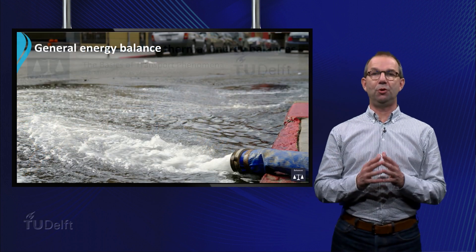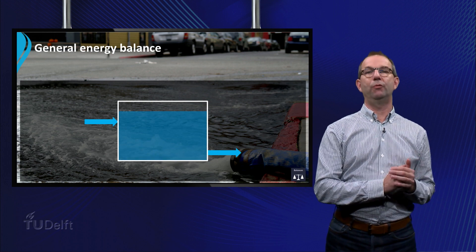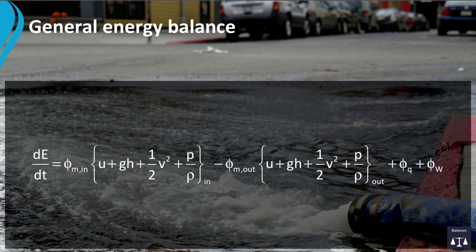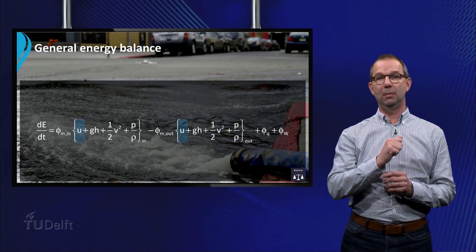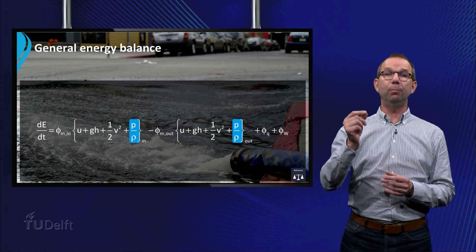In this course we introduced the energy balance for continuous processes where liquid flows in and out of a volume, and where energy is added by a heater and work may be done on the system. The energy balance is given by dE/dt equals the inflow times the energy concentration minus the outflow times its energy concentration, plus a heat flow phi_q into the system plus the work phi_w. In this equation you can recognize in the in- and outflows the internal energy u, the potential energy, the kinetic energy and the pressure energy, all per unit of mass.